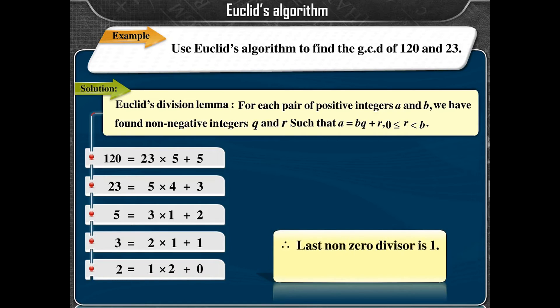Therefore, the last non-zero remainder is 1. Therefore, GCD(120, 23) = 1.